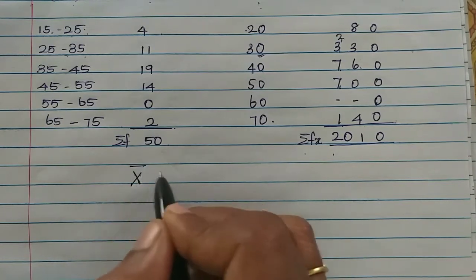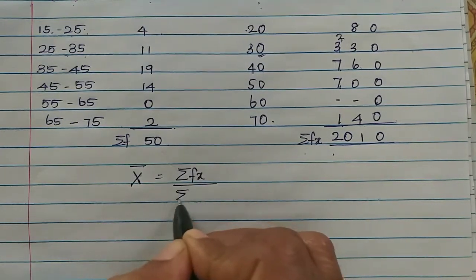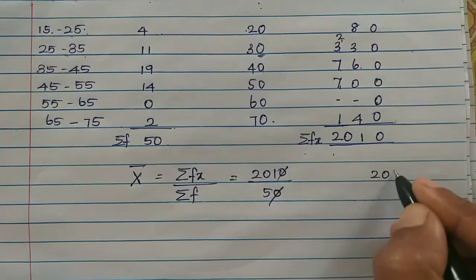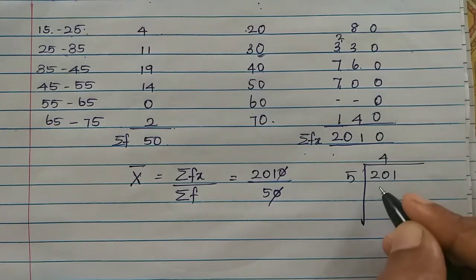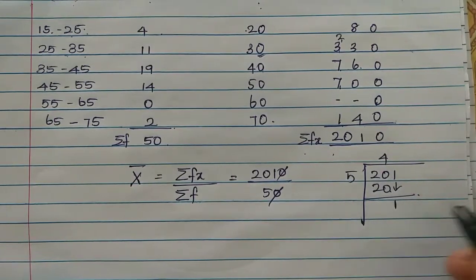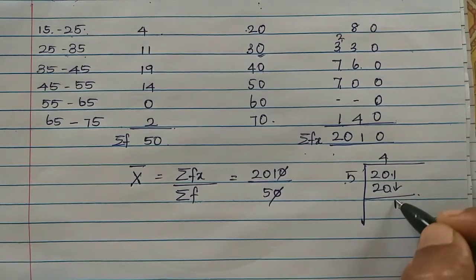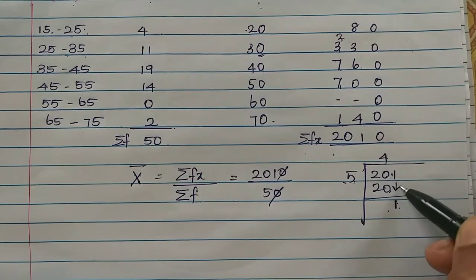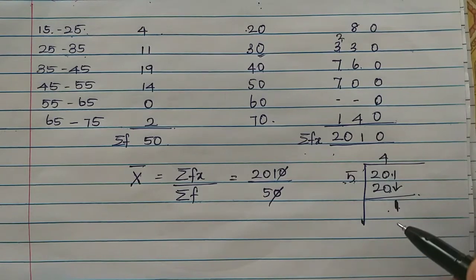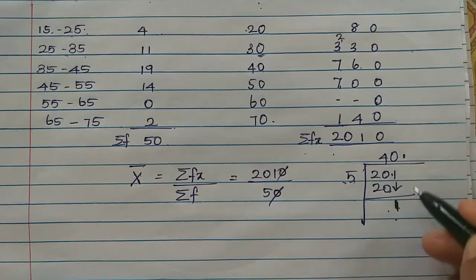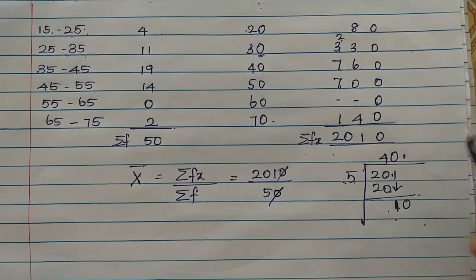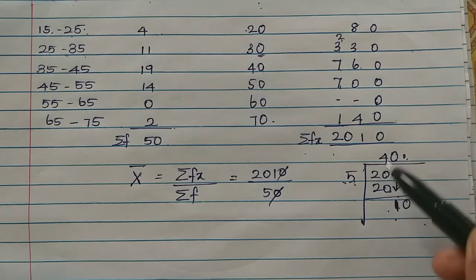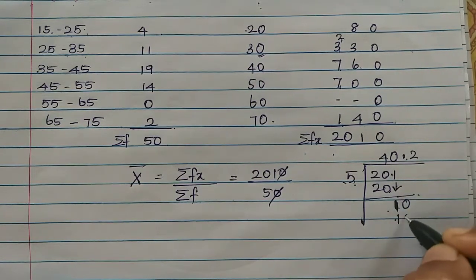Now we need to find the mean using the direct method formula sigma fx by sigma f. So 2010 divided by 50. Cancel the 0, then 201 divided by 5. 5 times 4 is 20, bring down the 1. The reminder is less than 5, so we use the decimal point. 5 times 2 is 10 and balance is 0.